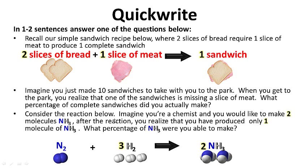Consider the reaction below. Imagine you're a chemist and you'd like to make two molecules of NH3. After the reaction you realize that you've produced only one molecule of NH3. What percentage of NH3 were you able to make? Go ahead and pause this while you do your quick write.